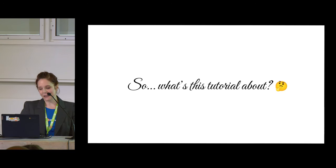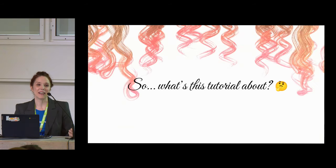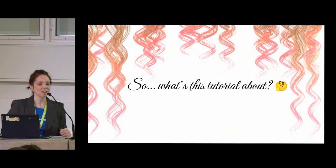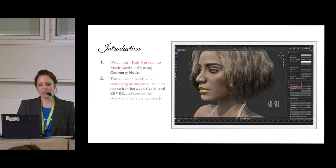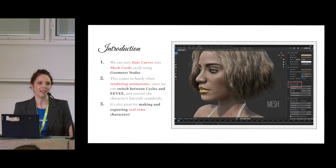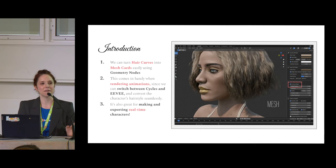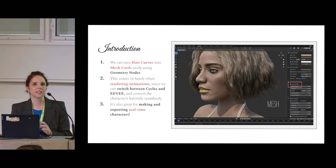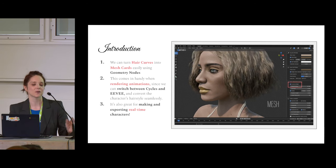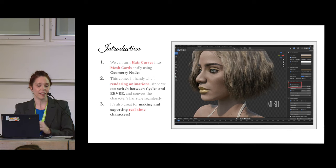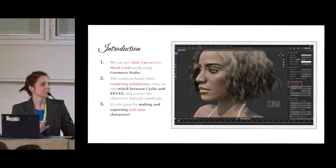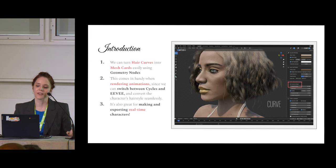This tutorial is about mesh hair made with hair curves, so you can continue grooming it and animate it using geometry nodes. One reason this is important is that it's very easy to switch between Cycles and Eevee. With this method you can create almost the same hairstyle both in mesh for Eevee and in particles for Cycles. It's also great for exporting real-time characters for video game creation.